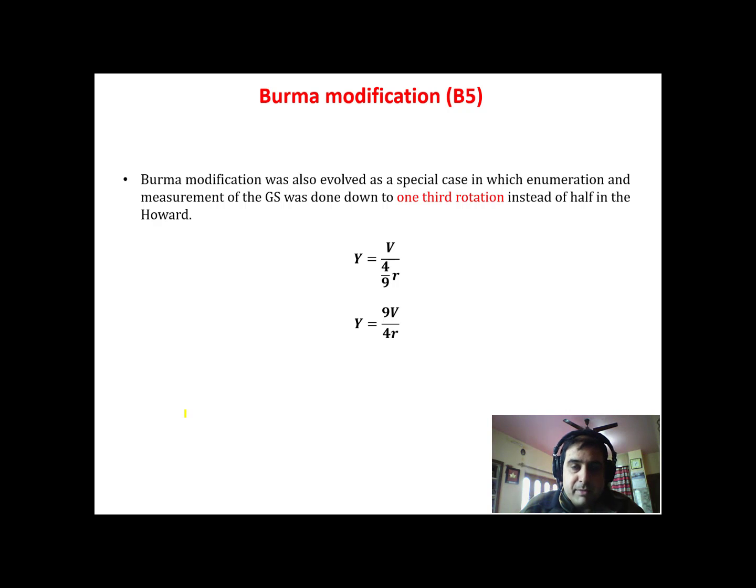Now another Simmons up to any nth portion of the growing stock. Now we have another Burma's modification which suggests us to the measurement of growing stock down to one third of the rotation. You can see here one third of the rotation.